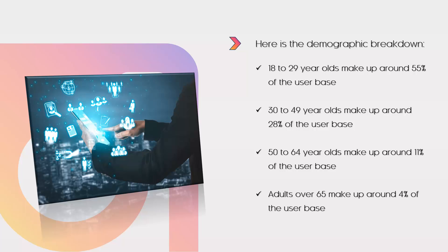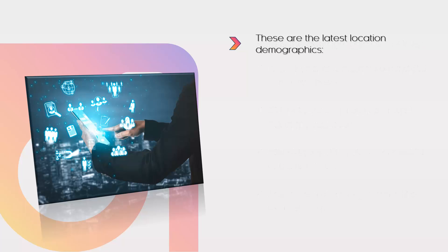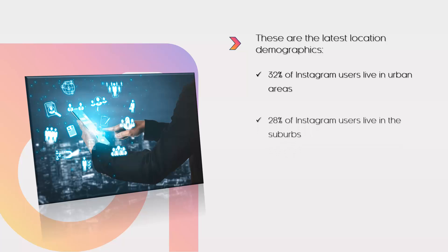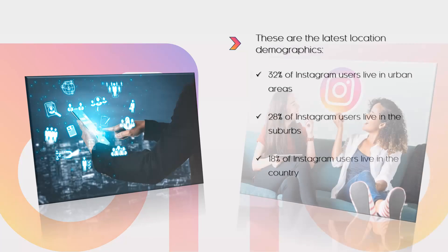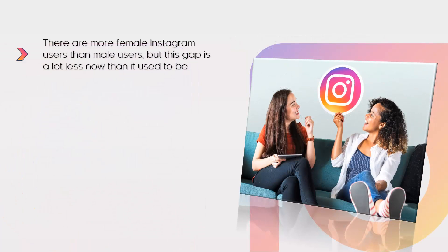Adults over 65 make up around 4% of the user base. Another interesting thing is where Instagram users live. The latest location demographics show that 32% live in urban areas, 28% live in the suburbs, and 18% live in the country.